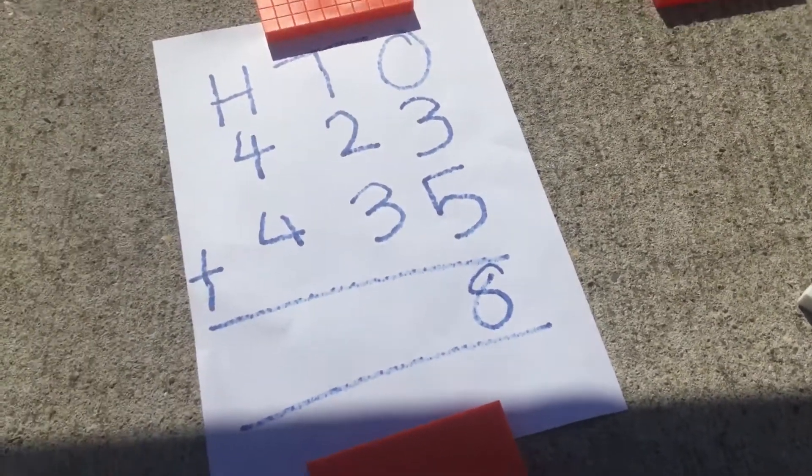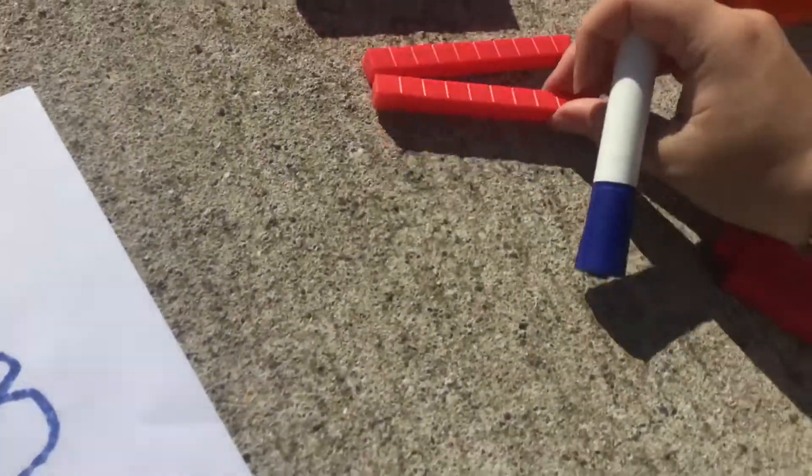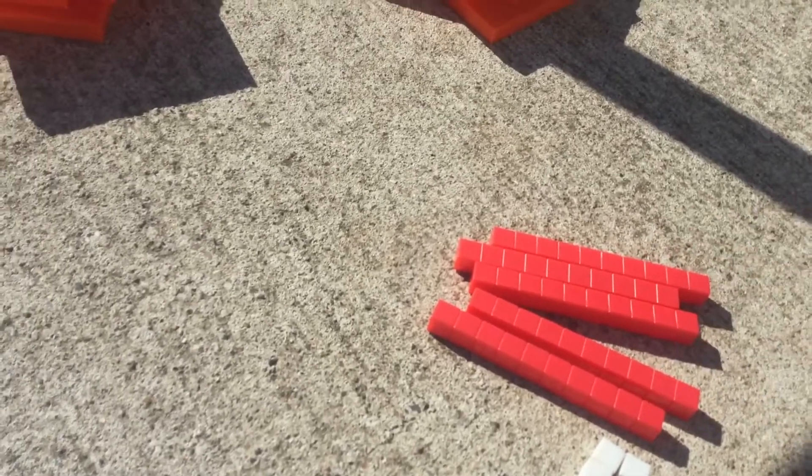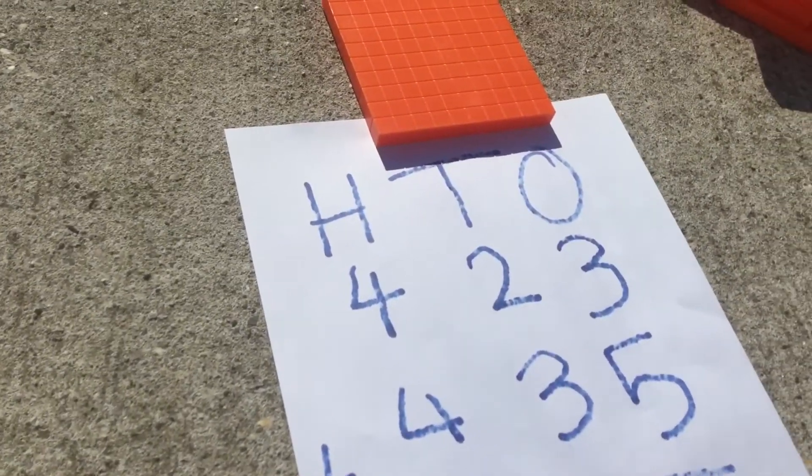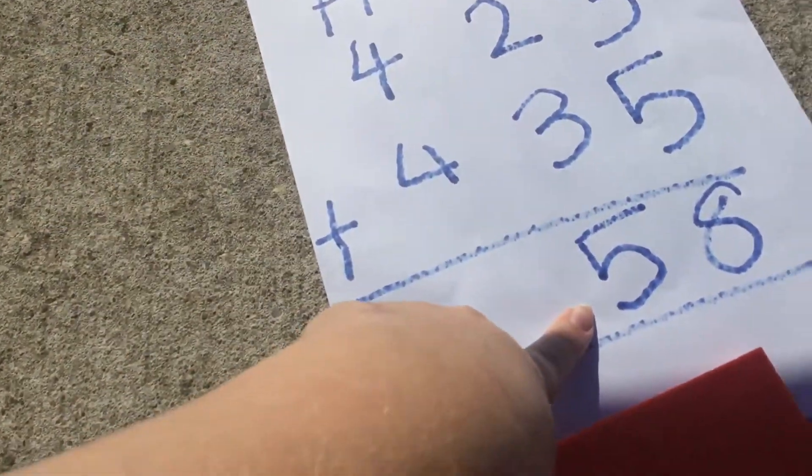Next, you move on to the tens. 30 add 20. 10, 20, 30, 40, 50. I need to write 50 in the tens column. 30 add 20 is 50.